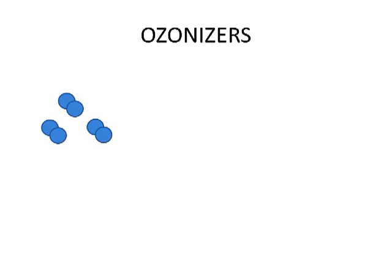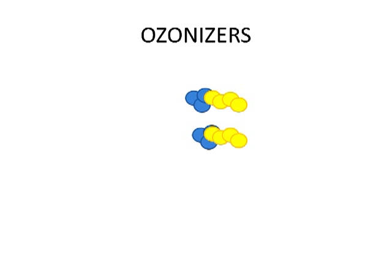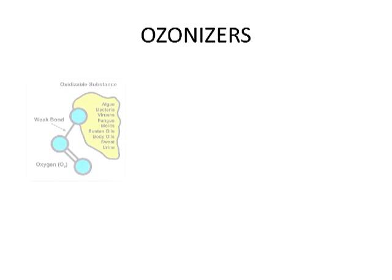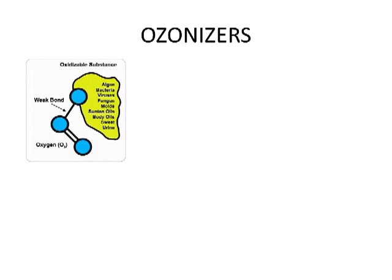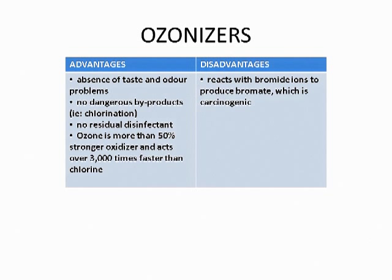How can these properties of plasma be used to purify water? Plasma can be used to produce ozone, which is an extremely strong oxidant. Ozone is produced by dissociation of oxygen. It is used to destroy bacteria and viruses by continuously breaking down organic compounds until carbon dioxide and water remain. Some advantages of using ozone are the absence of taste and odor, no dangerous byproducts, and no residual disinfectant after the process is complete. Ozone as an oxidizer is 50% stronger and acts over 3,000 times faster than chlorine. One disadvantage is that ozone reacts with bromide ions to produce bromate, which is carcinogenic.